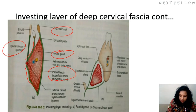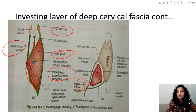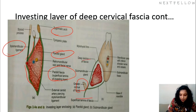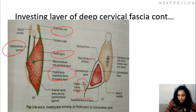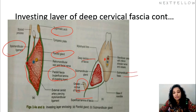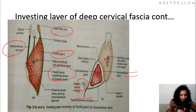Here we can see the hyoid bone. As it reaches the hyoid bone, it splits again into two laminae to enclose the submandibular salivary gland — this is the superficial lamina and this is the deeper lamina of the investing layer of deep cervical fascia — and finally it attaches at the margins of the mandibular fossa. That is about the investing layer of deep cervical fascia in the face.